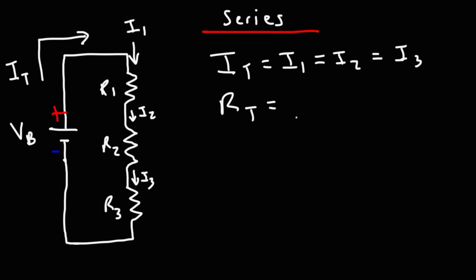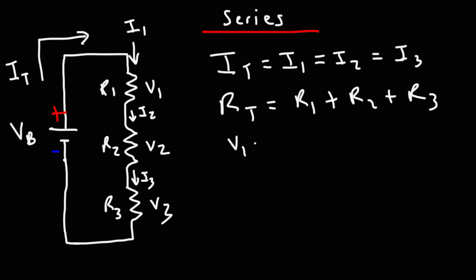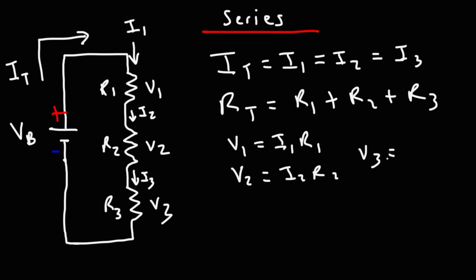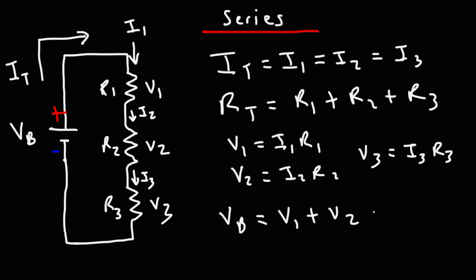The total resistance of three resistors in series is equal to the sum of those resistors. As regards voltage, the voltage across resistor 1 is I1 times R1 (Ohm's law: V equals IR), V2 equals I2 times R2, and V3 equals I3 times R3. The voltage of the battery equals the sum of all three voltage drops: VB equals V1 plus V2 plus V3.